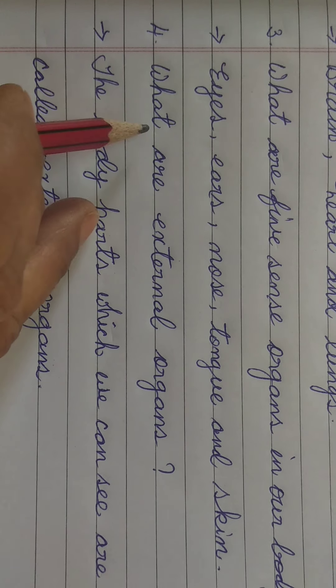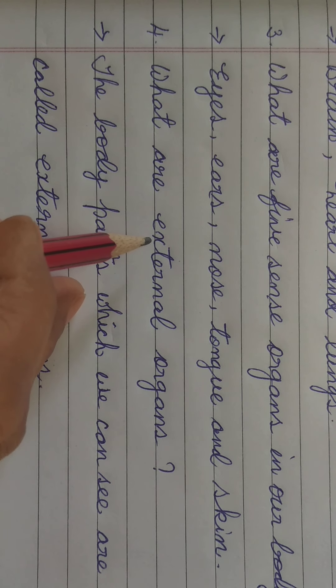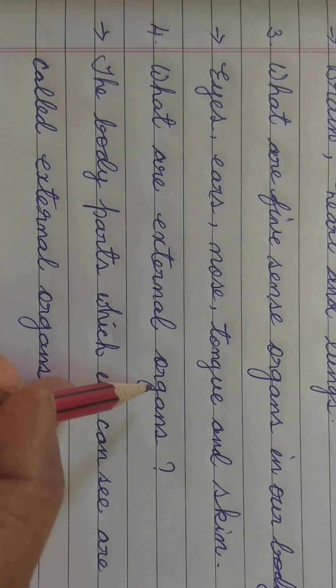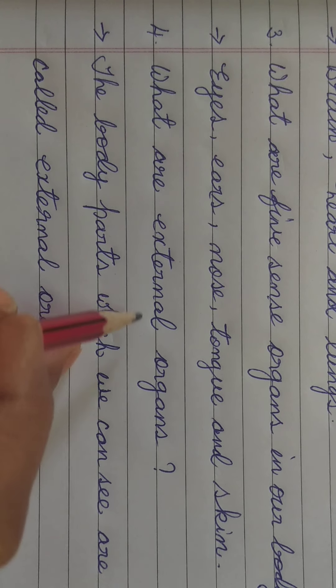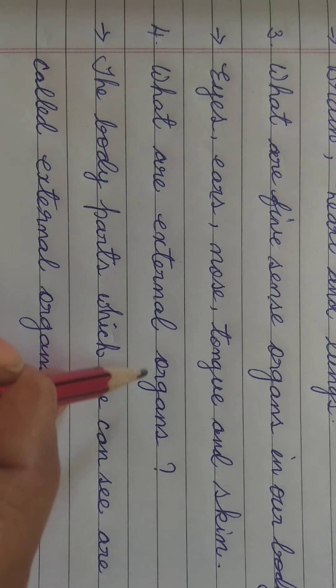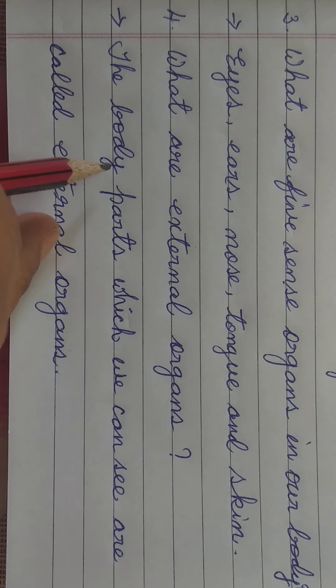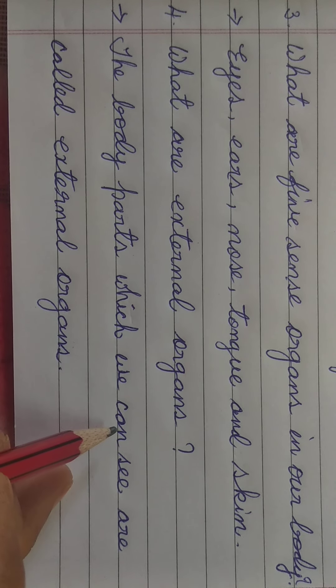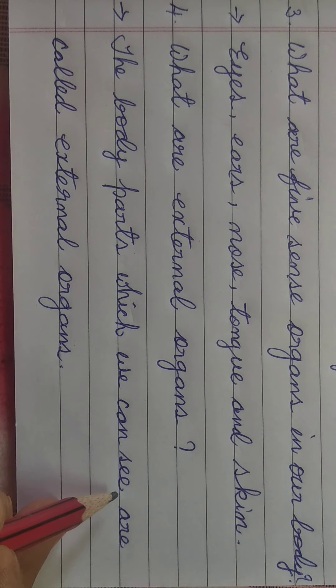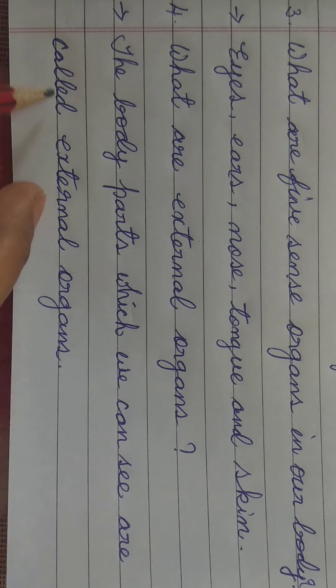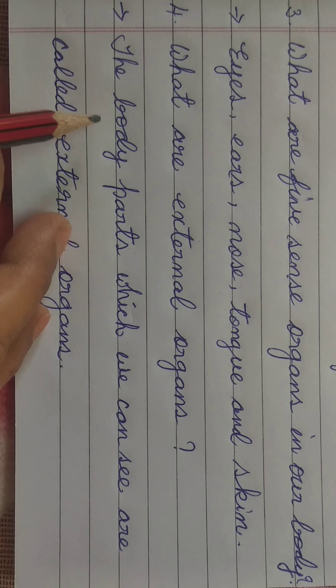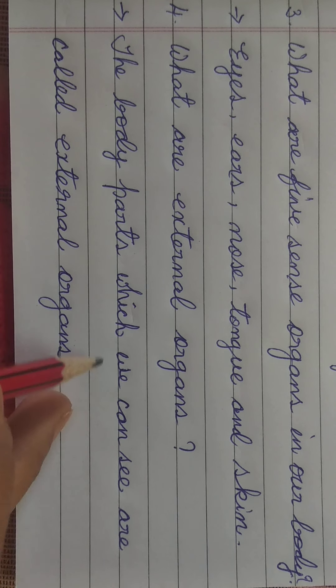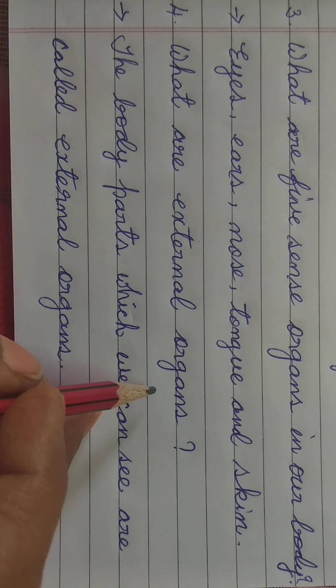Fourth one, what are E-X-T-E-R-N-A-L external O-R-G-A-N-S organs? External organs ka meaning kya hai? The body parts which we can see are called external organs. Joh body parts ko hum log dekh sakte hain, bahar ke tarah se, usko external organs kehte hain. Understand children.